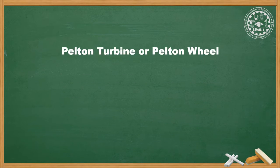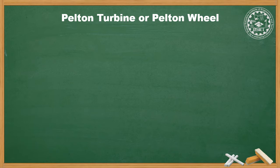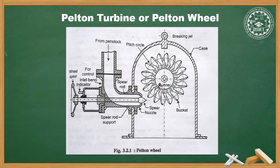Starting with Pelton turbine or Pelton wheel. The Pelton turbine is an impulse turbine best suitable for high head. Its parts include the runner, which consists of a circular disc mounted on a rotating shaft. This disc has cup-shaped blades called buckets, placed evenly spaced around the circumference. The buckets are divided into two halves in the shape of a double hemispherical cup called a splitter, which neutralizes the axial thrust.